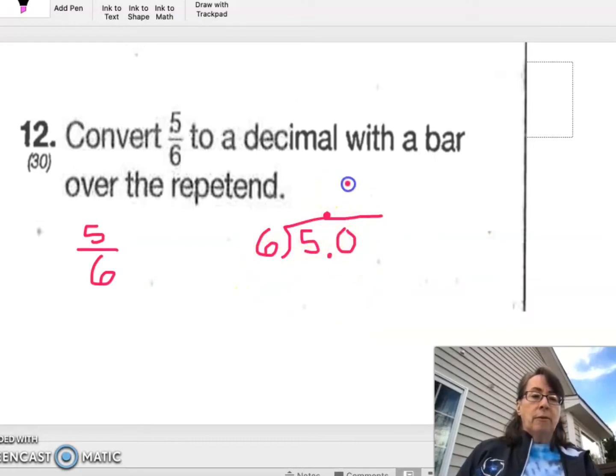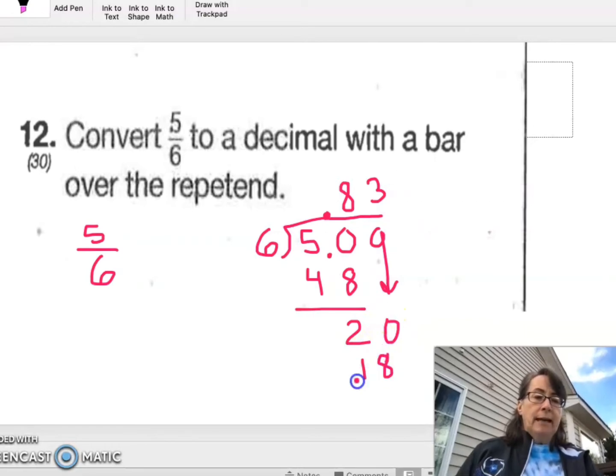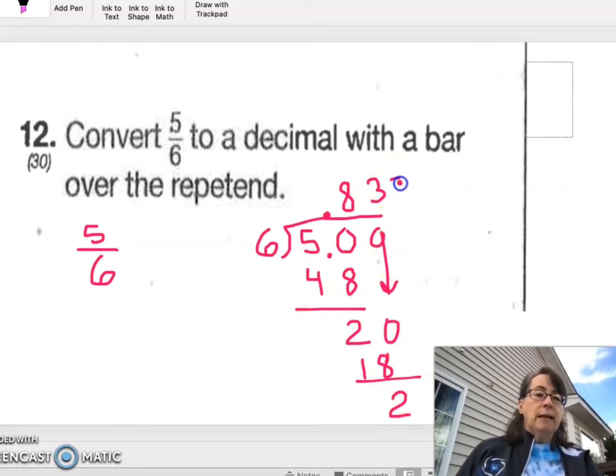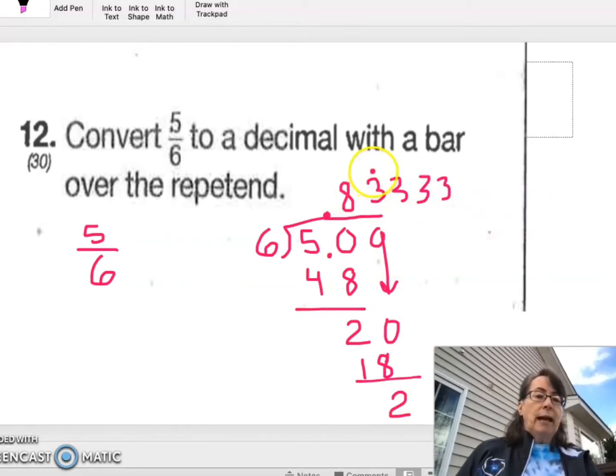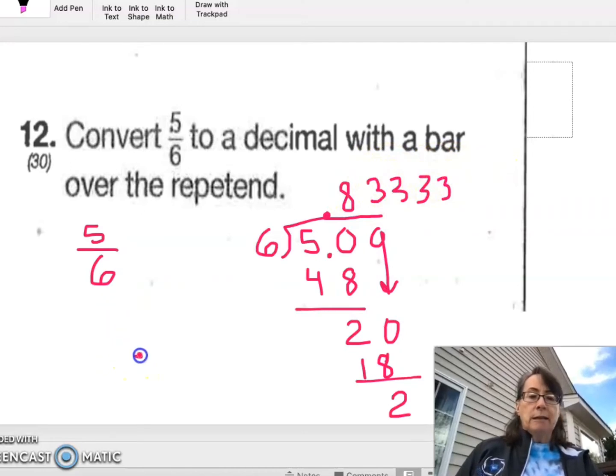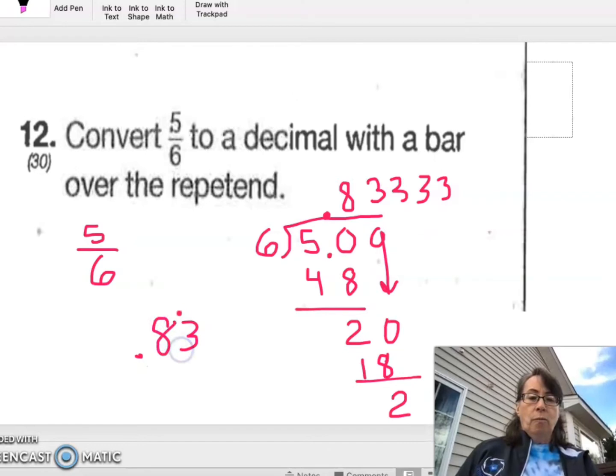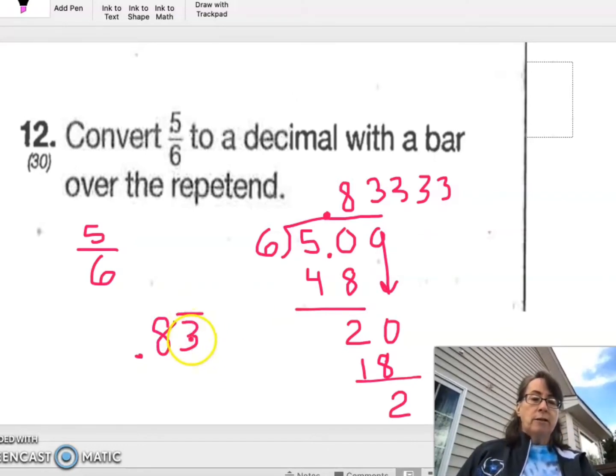So 6 into 50 is going to go 8 times. 8 times 6 is 48. We subtract and get 2. We bring down another 0. And 6 into 20 is going to go 3 times because 6 times 3 is 18. And we have another 2, which is what we had before. So we know this will continue forever. So we write that as 0.83 with the bar over this 3. It's called the repetend.